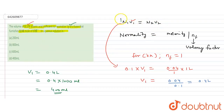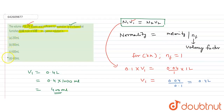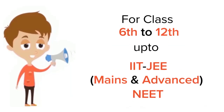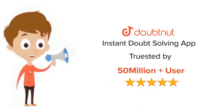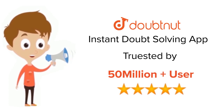Using the law of equivalence and the concept of normality and n-factor, we calculated the volume easily. Option D (400 mL) is the correct answer; options A, B, and C are incorrect. For Class 6–12, IIT JEE, and NEET level problems, trusted by more than 5 crore students — download the DoubtNet app today.